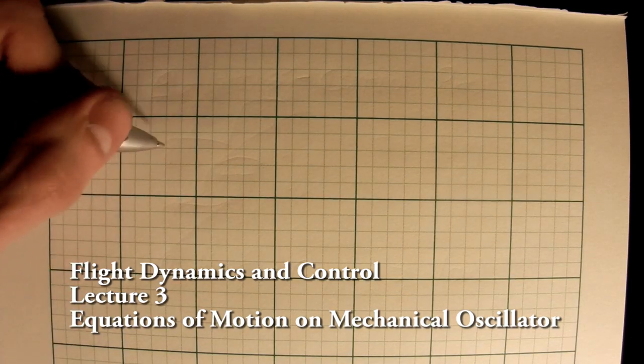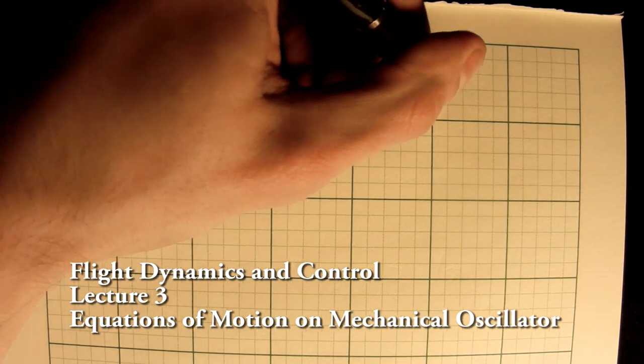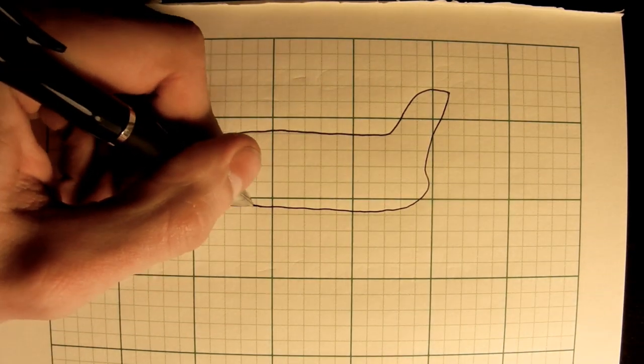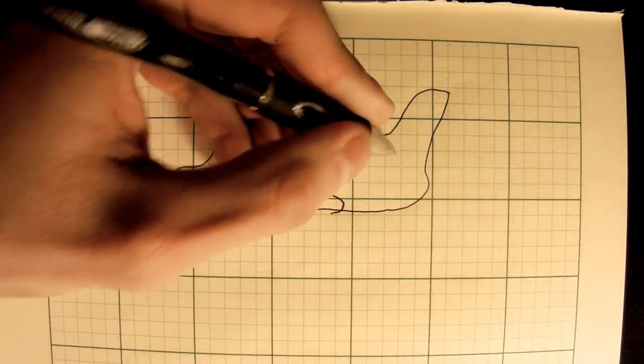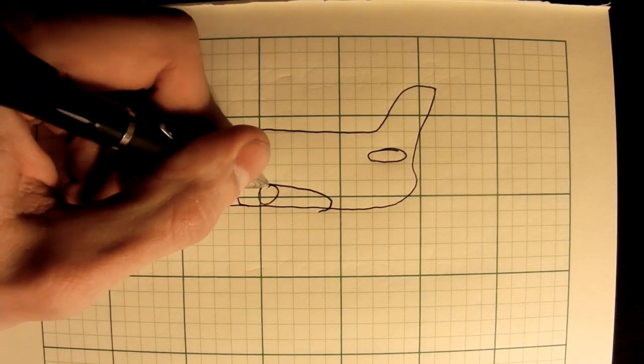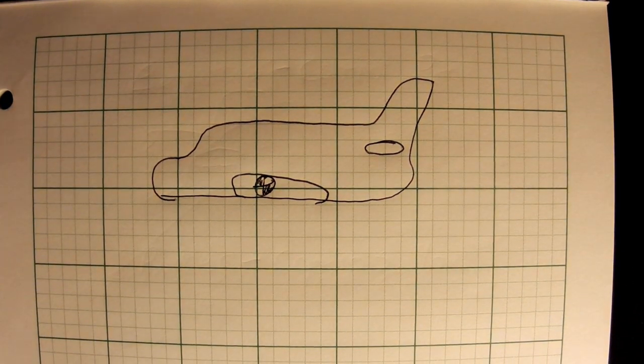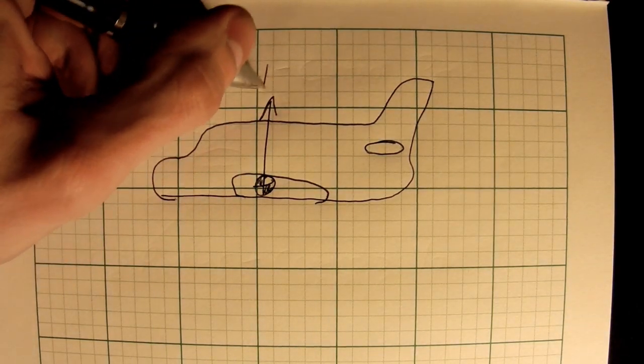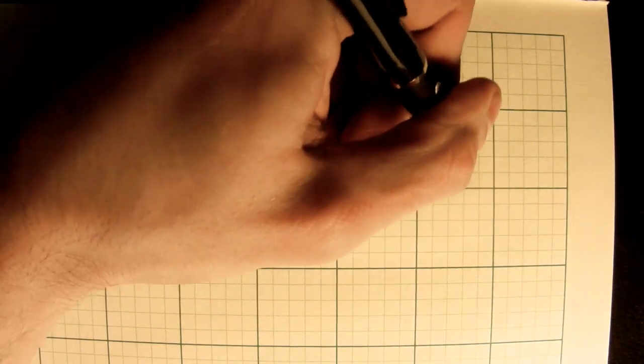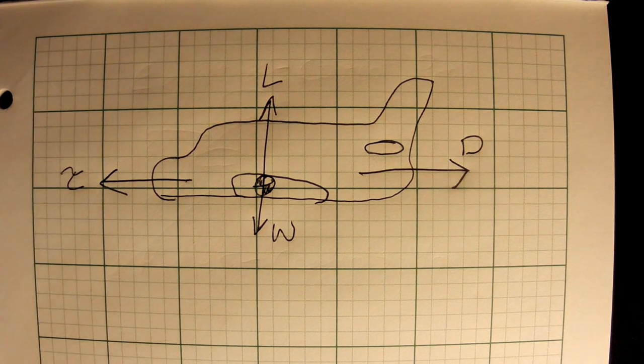So we have our airplane right here. I'll try to draw another airplane. Hopefully I get good at this by the end. Looks better and we have our wings right here. Okay, so here's our center of mass right here. What are the forces on a plane? Well, we're just gonna be pretty simple right now. We have our lift, we have our weight, we have our drag and we have our thrust. That's pretty simple.